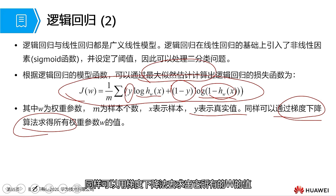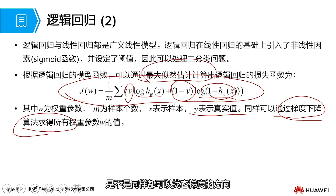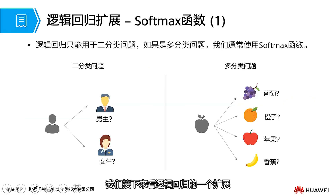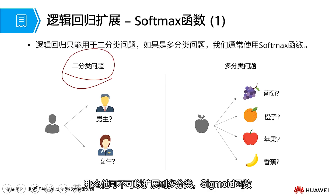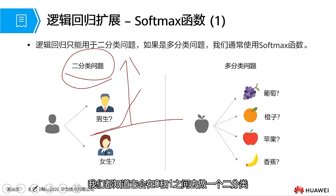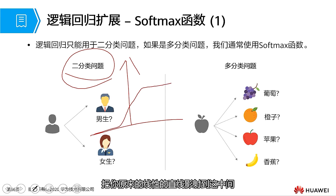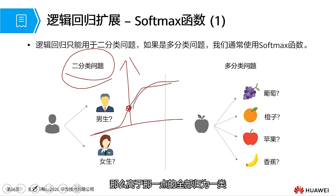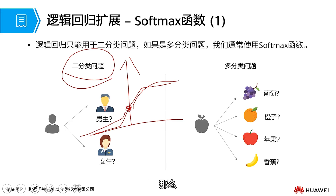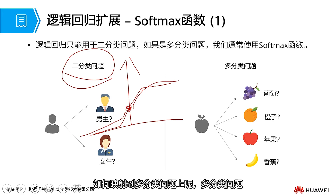Next, let's look at an extension of logistic regression. Logistic regression is a binary classification problem. Can it be extended to multi-classification? The sigmoid function performs binary classification between 0 and 1, mapping your original linear output to a point — all points higher than that point are classified as one category, those below are classified into another category. How to map it to a multi-classification problem? For multi-class classification problems, we usually use the softmax function. Just like this, we can classify grapes, oranges, apples, and bananas.